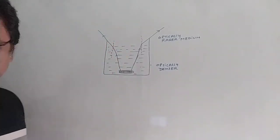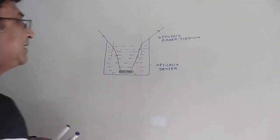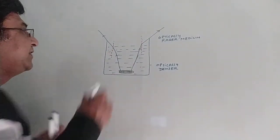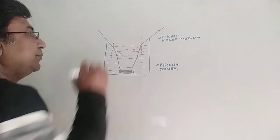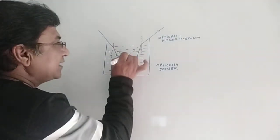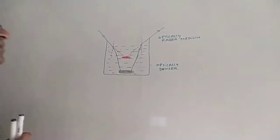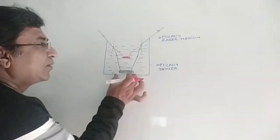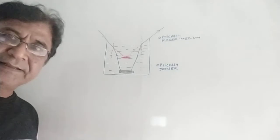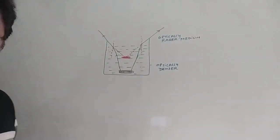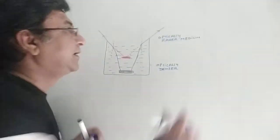These are two refracted rays that do not meet anywhere going forward, but if we extend them in the backward direction, they will meet at a point above the original position. So we see the coin's virtual image above where the coin actually is — that is why a coin placed in water appears above its original position.